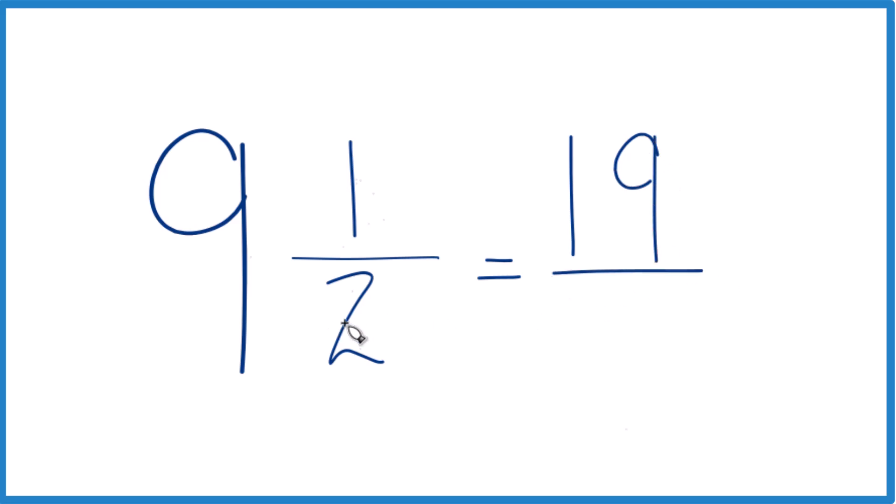And then we just bring the denominator, the 2, across. And 9 and 1 half, the mixed number, equals the improper fraction, 19 halves.